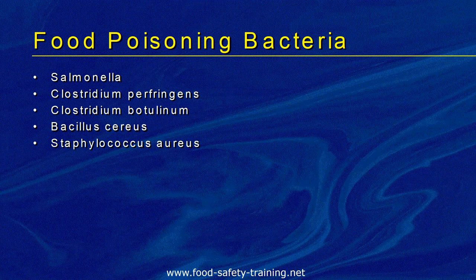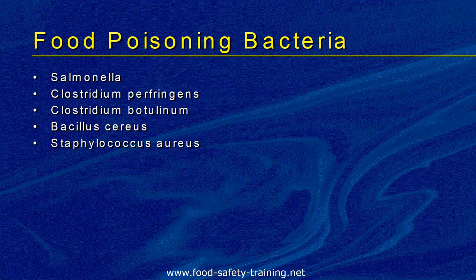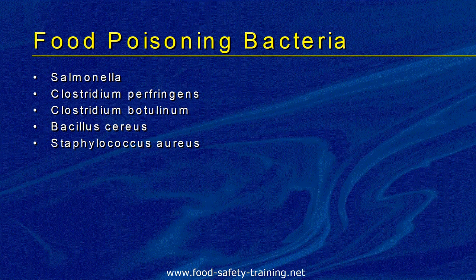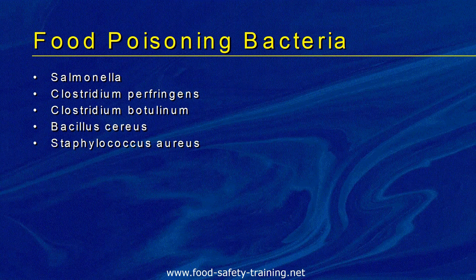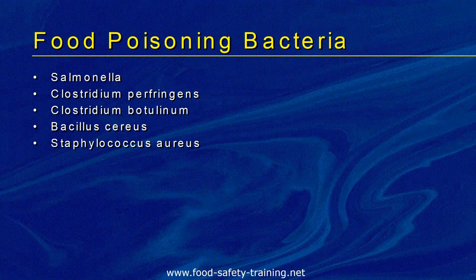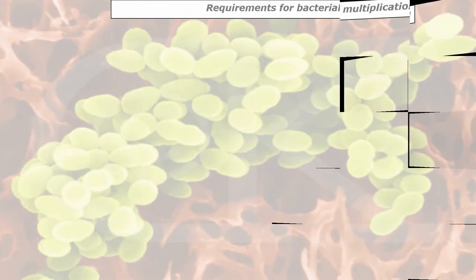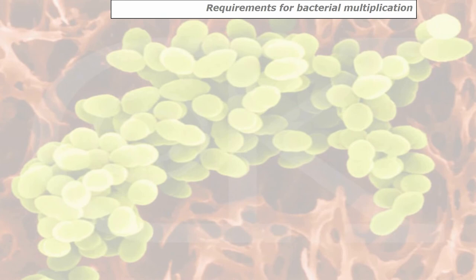Staphylococcus aureus actually protects us from contracting other infections. There must have been some sort of deal struck up many millions of years ago between this bacteria and animals — it's called a symbiotic relationship. We let the bacteria live on us; they feast on our sweat, are salt tolerant, have plenty of moisture, and in return they protect us from infections. The requirements for bacterial multiplication are very much like our own needs: food, moisture, warmth, and time.